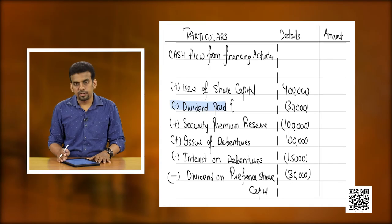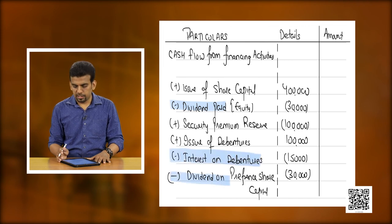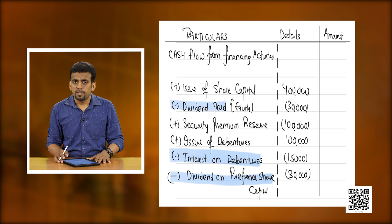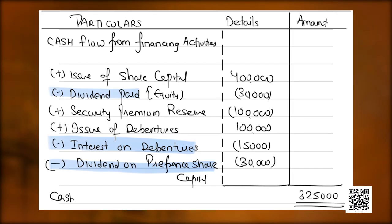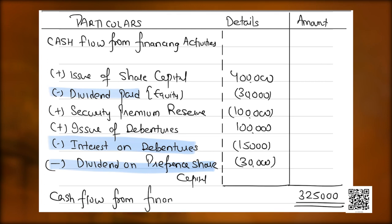There are 3 special items: dividend paid on equity, interest on debentures, and dividend on preference share capital. These are added and subtracted according to inflow or outflow of cash in financing activities, but they are to be treated twice — the reverse effect is to be provided in cash flow from operating activities. This is how a full-fledged cash flow statement question is done. Let us balance it to get the conclusion: cash flow from financing activities.